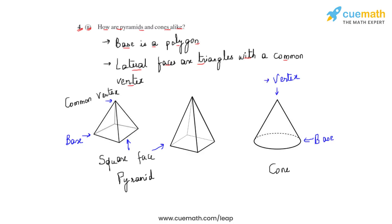So these are the two different parts we have covered, where we have understood how a cylinder is similar to a prism and a cone is similar to a pyramid. This is how we answer the fourth question of this third exercise.